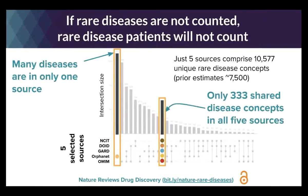Thinking about variant prioritization and diagnostics for rare diseases: approximately 7,000 rare diseases have been described since the Orphan Drug Act of 1983, but that number hasn't really been updated. Looking at the top five most widely used rare disease sources, we found over 10,000 unique rare disease concepts. The majority exist in only one source, and only 333 disease concepts appeared in all five — speaking to the great need to harmonize these resources so every patient anywhere in the world has an equal chance of receiving a diagnosis.